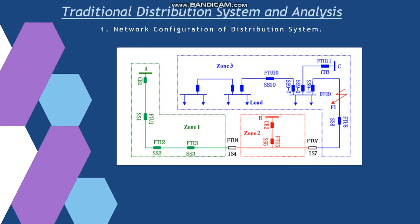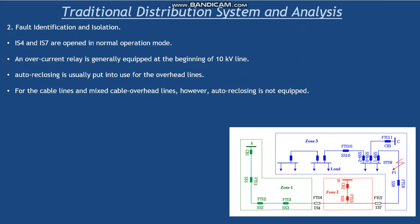This is a traditional distribution system which consists of three zones: Zone 1, Zone 2, and Zone 3. And you can see A, B, C are bus bars of 11 KV. So basically, IAS 4 and IS 7 are open in normal operation mode. IAS 4 and IS 7 are basically interconnection switches. Whereas, overcurrent relays are generally equipped at the bus bars, that is at the beginning of 11 KV line, that is A, B and C.